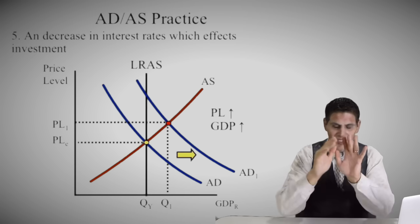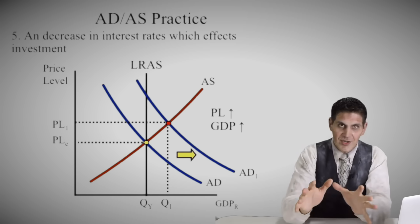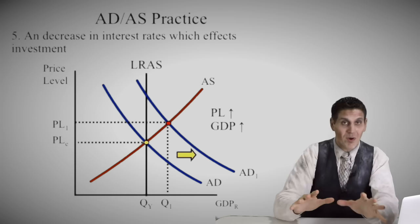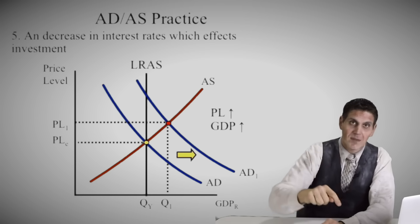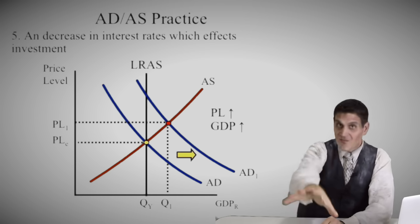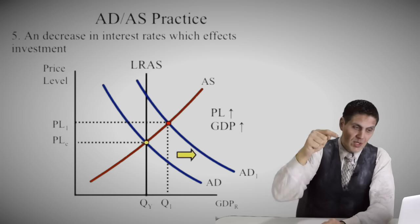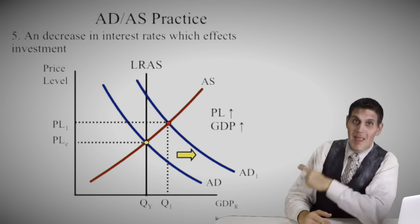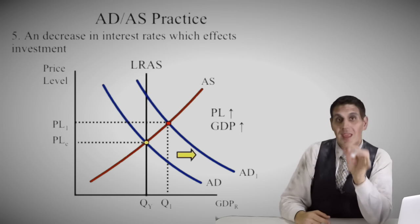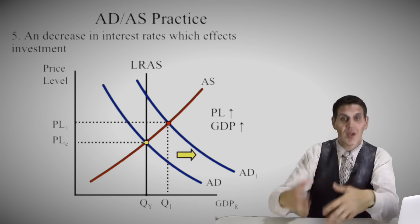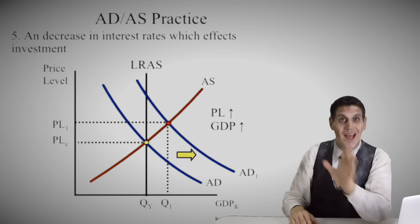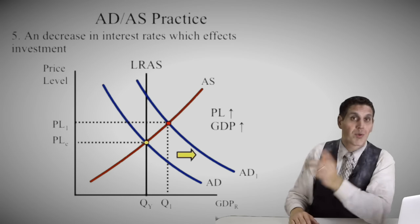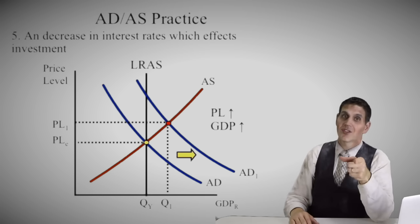Number five — and the last one — a decrease in interest rates. That's the most important concept: you've got to understand interest rates. Interest rates relate to investment — investment means taking out loans. A decrease in interest rates would mean more investment, and more investment is an aggregate demand shifter first. Yes, more investment would lead to more capital, more machinery, more factories, and that would affect aggregate supply and long-run aggregate supply eventually — but in the short run, aggregate demand would go up, price level goes up, real GDP goes up. There are your answers.